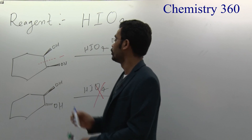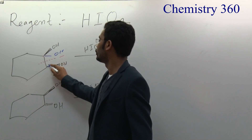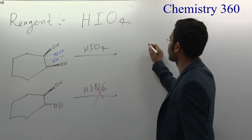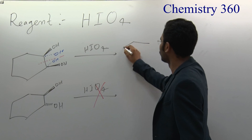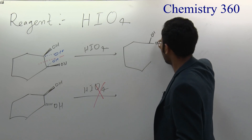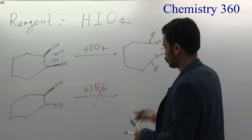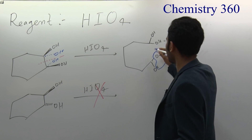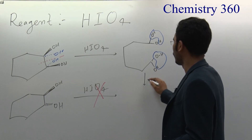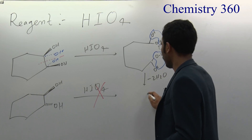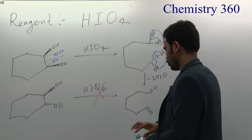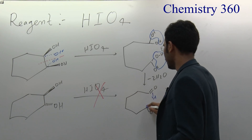You break the carbon-carbon bond and add two OH groups, one on each carbon — write that in dotted notation. So what is the product? Each carbon gets 2 OH groups. Remove 2 water molecules (minus 2 H₂O), and the products formed are two aldehydes.